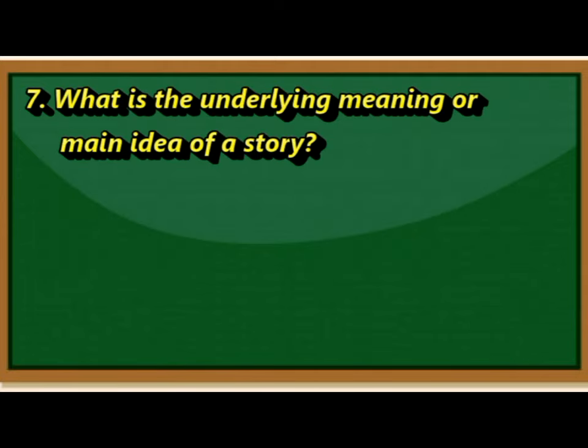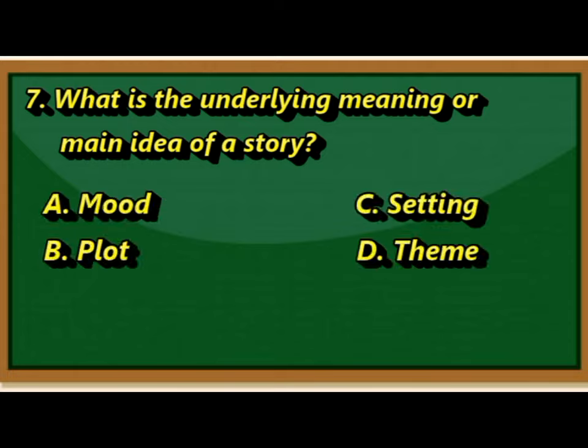Number seven, what is the underlying meaning or main idea of a story? A, Mood. B, Plot. C, Setting. D, Theme.